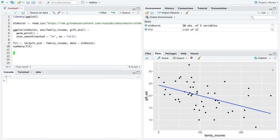Okay, here we go. We're going to jump into R and we're going to continue with this example based on the Elmhurst College data set, where we are trying to predict gift aid based on family income.